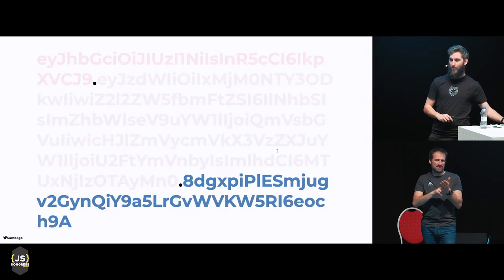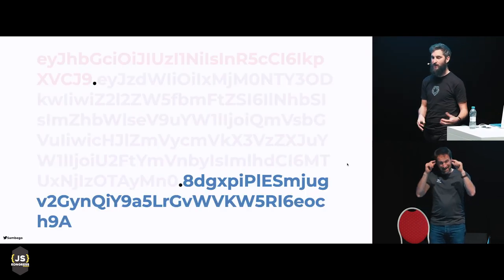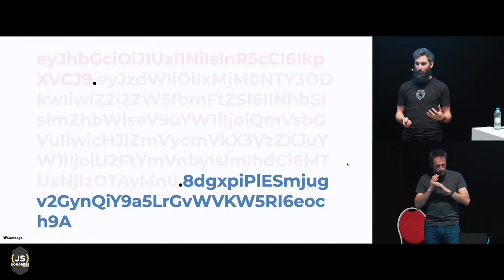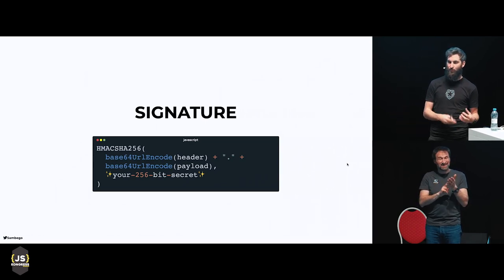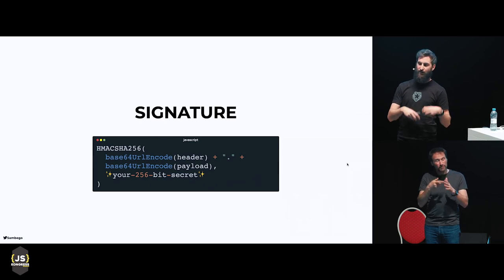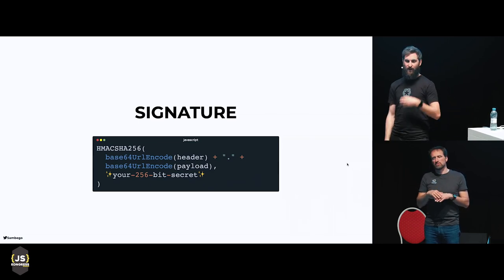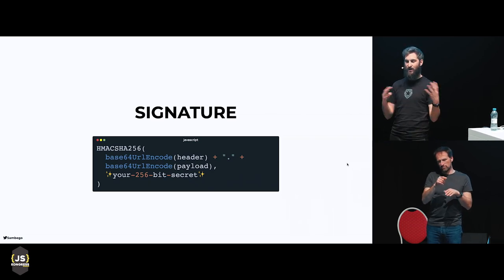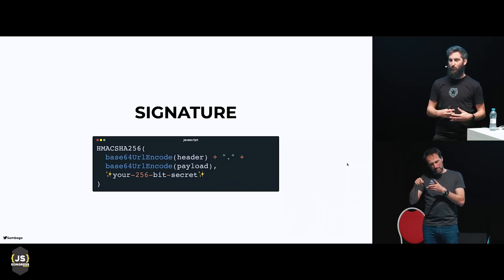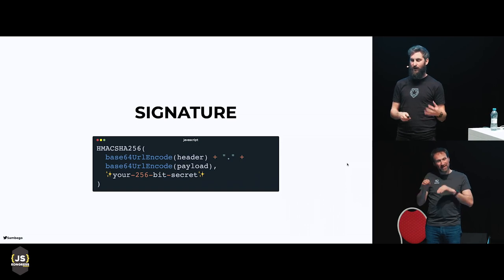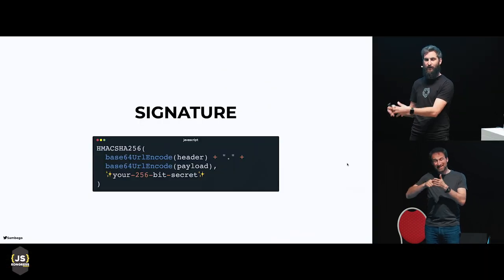We've seen the header, we've seen the payload — onto the third part, which is the signature. You can always prove the validity of a JSON Web Token through the signature. You take the base64 of your header, add a dot, take the base64 of your payload, then use a signing function — it can be HMAC or something else — to get the signature of the header and payload. So if something changes in the header or the payload, the signature will also change, and tampering with the contents will tell you the token is no longer valid.